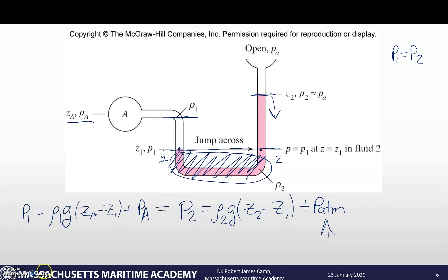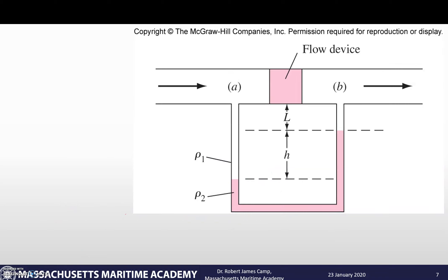Let's look at another situation — something like what you're going to see in the thermal fluids lab. We have a U-tube manometer hooked up to a pipe, with some flow device measuring something in between. We're trying to figure out the pressure drop between the fluid at point A and the fluid at point B. We do the same thing. We look at our working fluid — the pink-colored one — and those two points are at the exact same height. Since they're at the same depth, there's point one and point two, and the pressure at point one equals the pressure at point two.